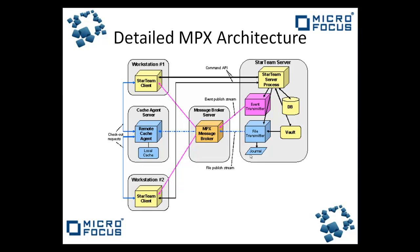This diagram provides a more detailed overview of the Star Team infrastructure with MPX. Notice the presence of a file transmitter and event transmitter in this diagram. These components are internal to the Star Team server and do not need to be installed separately. In this example, Star Team clients check files out from the remote cache agent, providing quicker response times than checking out from the server. Clients also use the MPX message broker, which provides up-to-date status information in a much more timely fashion.